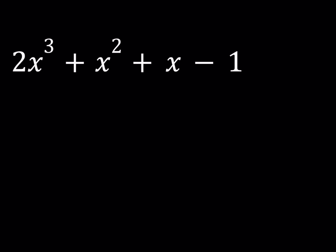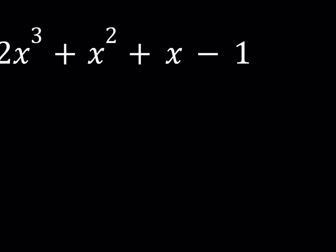First of all, notice that we have 2x³. When you have an x³, and then at the end, the constant is negative 1. This is what I'm thinking. If you practice, you'll start saying things like this.